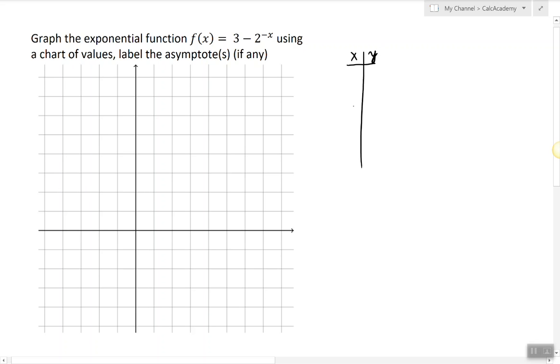So we're going to start with 0, 1 and see what happens. So evaluating this function at 0 gives us 2 to the power of 0 is 1, 3 minus 1 is 2. So at 0 the function is 2.